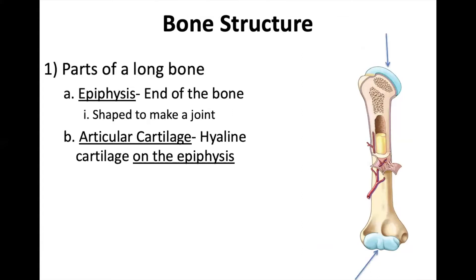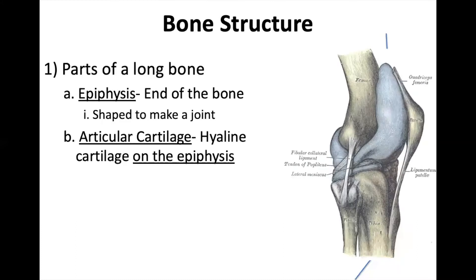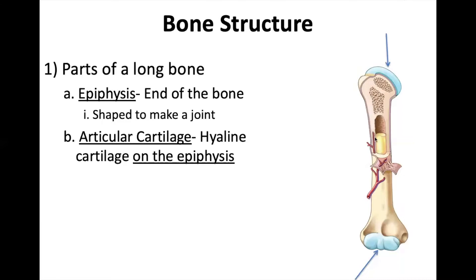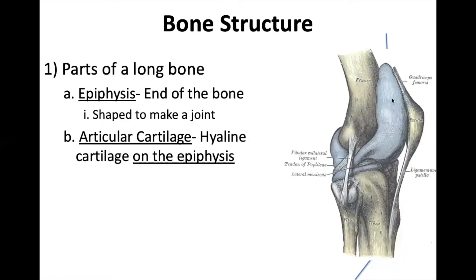On top of your epiphysis is hyaline cartilage — we call it articular cartilage. If you remember the vocab word articulation, it means movement. This is cartilage we have where there's going to be movement of other bones, where one bone is going to be scraping against this bone. So we have articular cartilage as protection. This picture is of a knee — our previous picture was the humerus, your arm bone. Your knee has a lot more weight to it, so you're going to need a lot more articular cartilage. There's going to be a difference per joint.